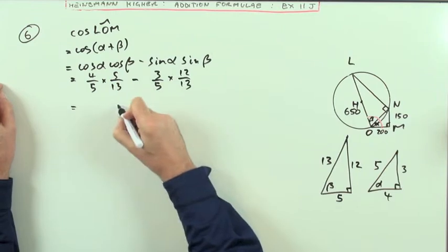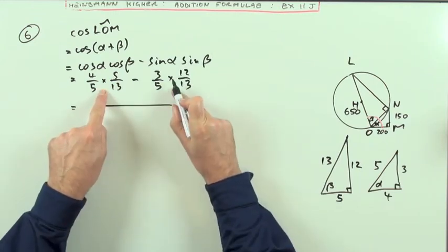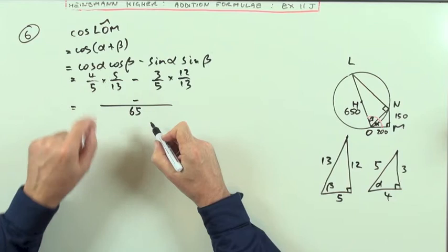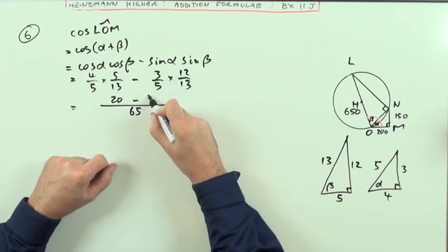Same denominator, 65 for them both, so that's going to be 65. The top of that would be 20, top of that's 36.